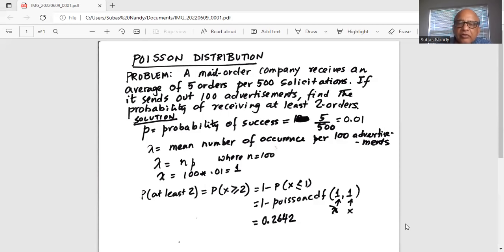But what we do not want or what we are leaving out is probability of 0 and probability of 1. So x greater than or equal to 2 is the complement of the event x less than or equal to 1. So by using the rule of complements in probability, the probability of x greater than or equal to 2 is 1 minus probability of x less than or equal to 1.